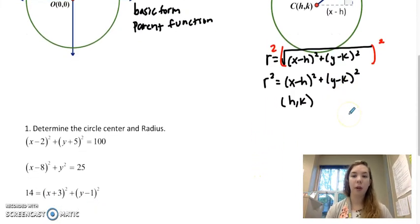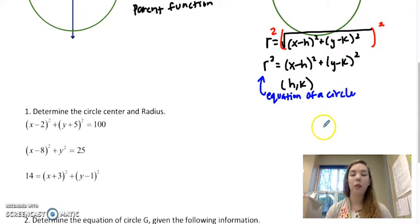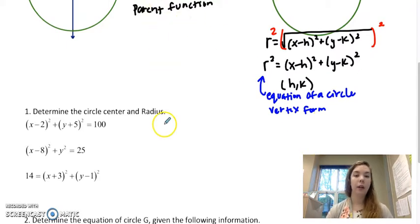So this is what we call the equation of a circle. And there are multiple forms, just like with quadratics or lines or several forms, and this one is called vertex form, and sometimes it's called standard form, but it's the most common one that you'll see.